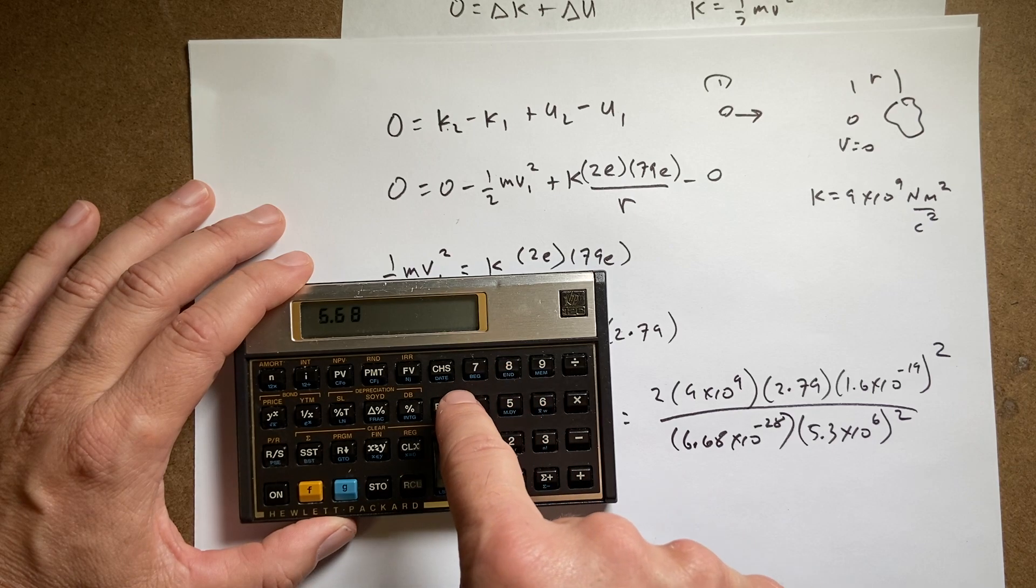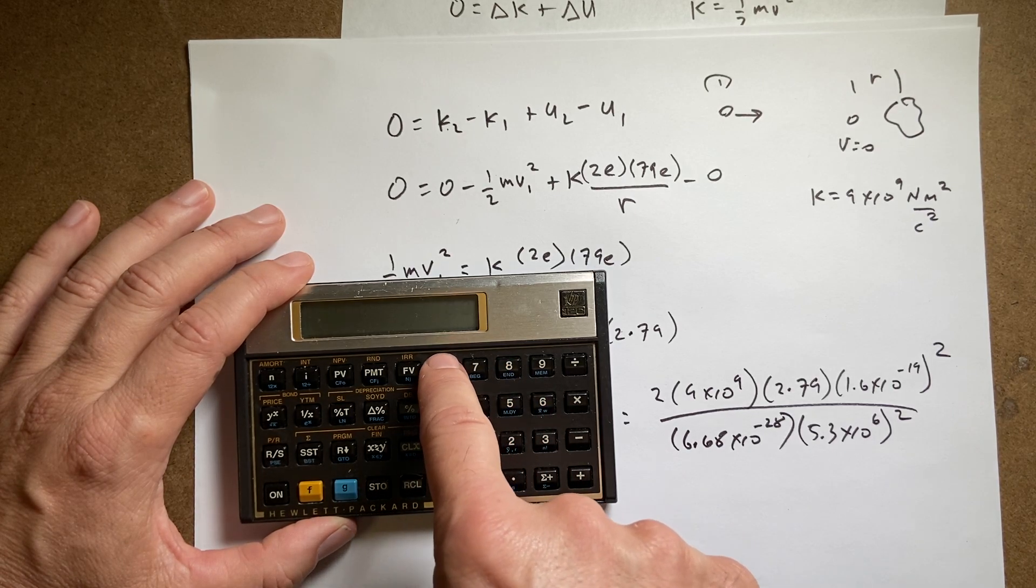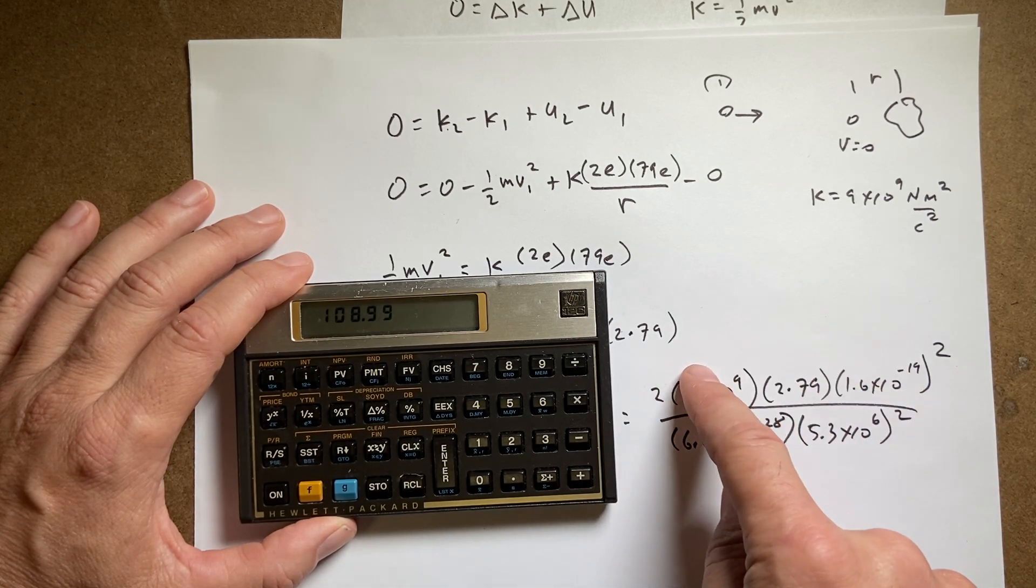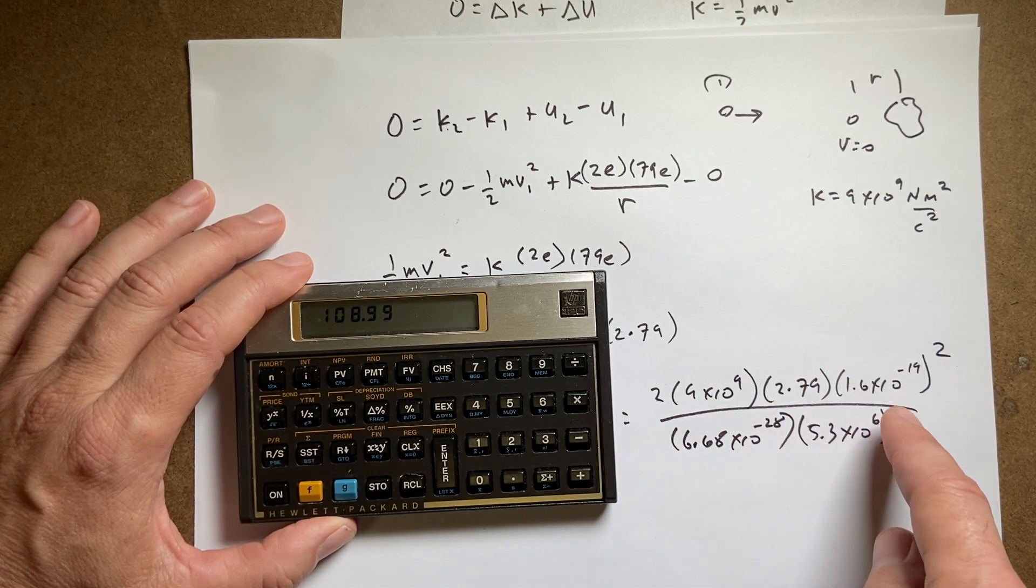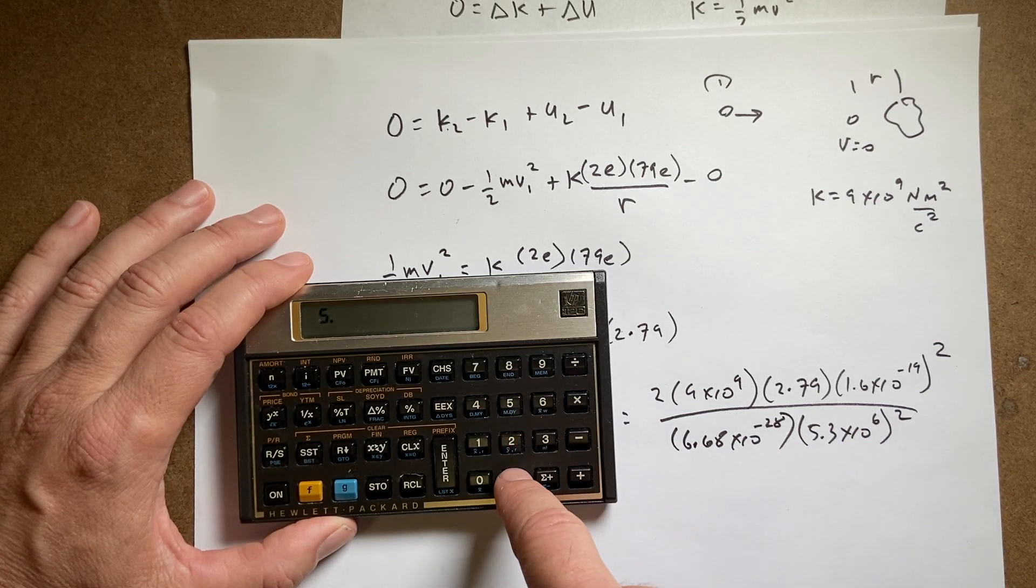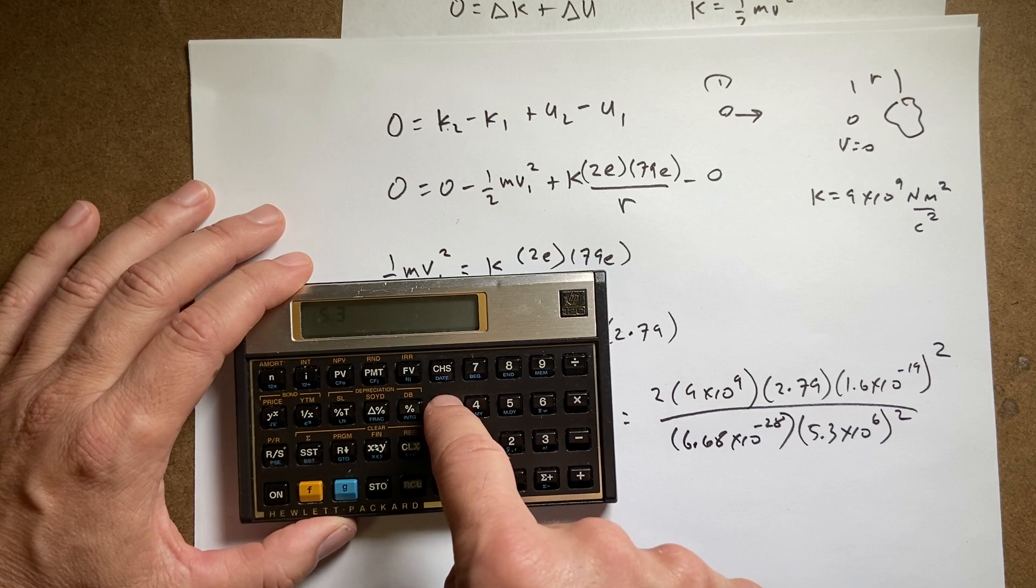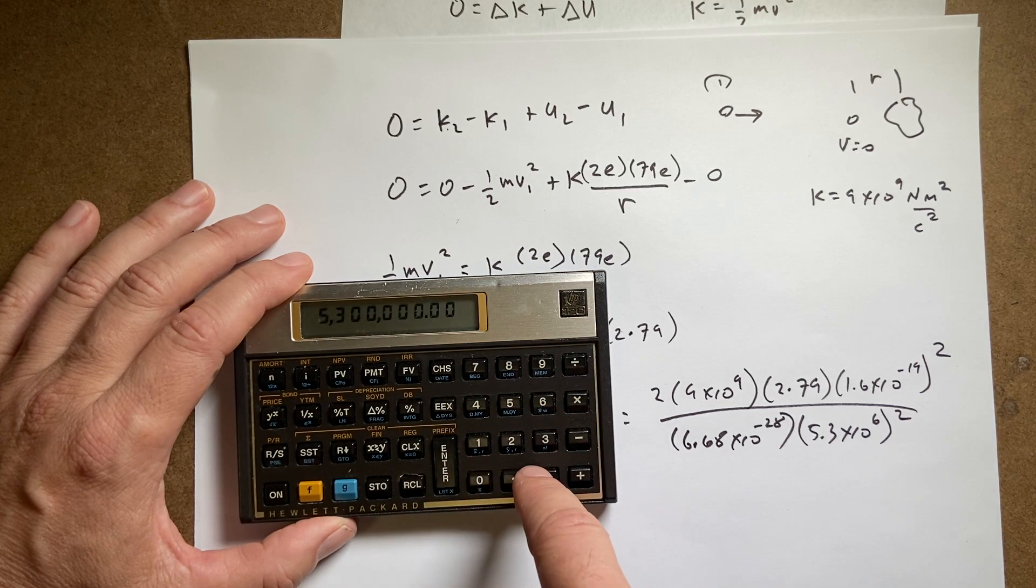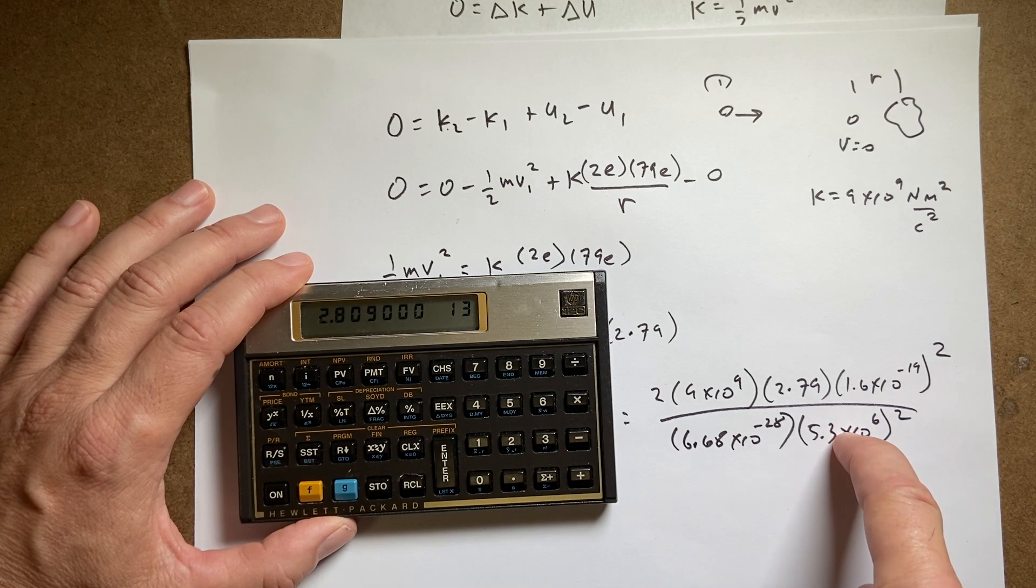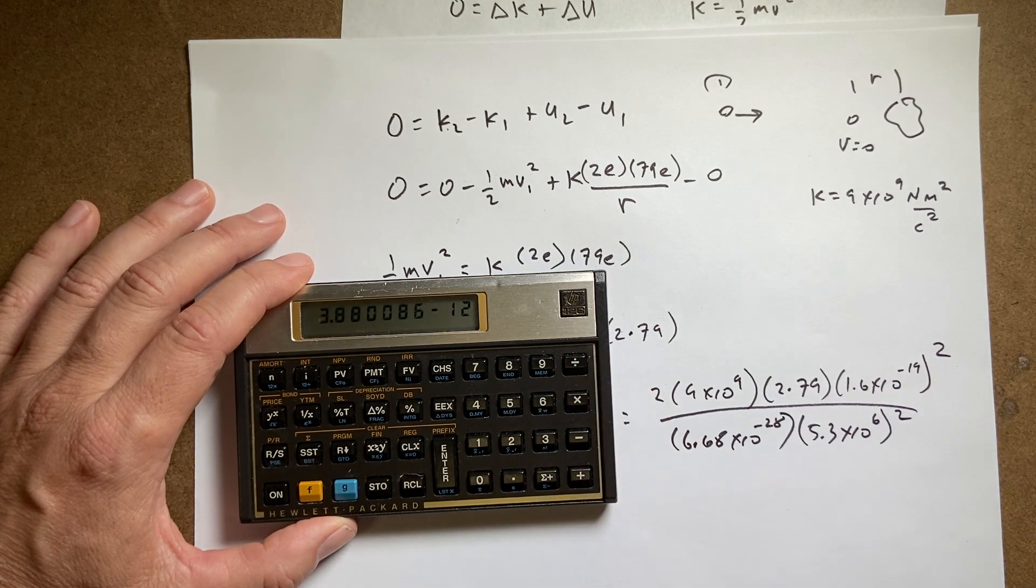6.68 times 10 to the negative 28 divided by. I took all that stuff and divided by that number. Now I'm going to take all that stuff and divide by this number that I need to square it first. So I'm going to say 5.3 times 10 to the sixth. Enter. 2 squared. Now I have that squared. Now I need to divide it. I get that.